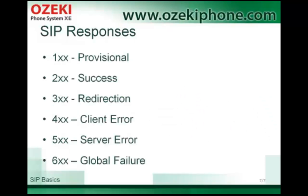Every request has any kind of responses and every response has a unique number as well. Provisional responses are informal messages — for example, it can signal that a phone is ringing. The Success response shows that the request was successful.